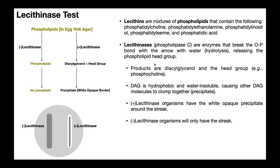The products of a lecithinase's reaction on a phospholipid are diacylglycerol and the head group. What's important to realize is that diacylglycerol is hydrophobic — it's water insoluble, and so it doesn't like to be around water. Therefore, molecules of DAG, when they're produced, stick together and clump. When you have a lot of these DAG molecules produced, they form a precipitate. So when interpreting a lecithinase test, if you have a positive lecithinase organism, it'll actually have a white opaque precipitate around the streak.